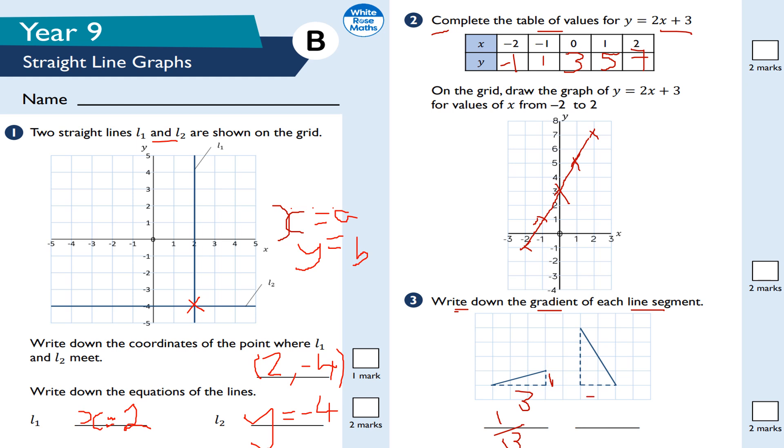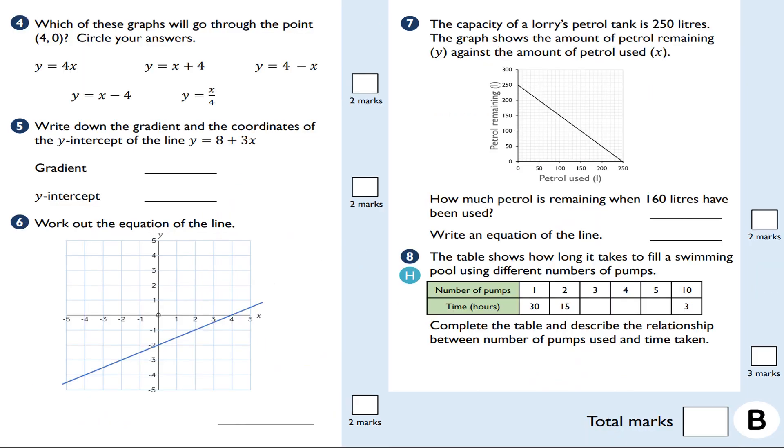We go across minus 2, because we're going to left 2. Then we go up 4. So, it's 4 divided by minus 2, which would be negative 2 or minus 2.